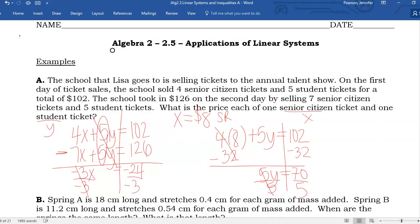Divide both sides by five. Fifty would be ten. Another twenty would be four. So that looks like fourteen. And that's it. So, an $8 senior ticket, a $14 student ticket, and we are done.